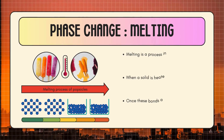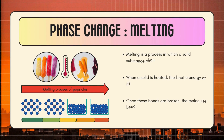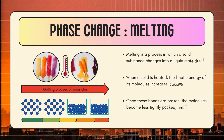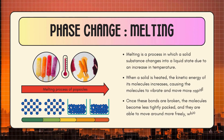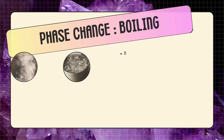Phase changes through heating — melting is a process in which a solid substance changes into a liquid state due to an increase in temperature. When a solid is heated, the kinetic energy of its molecules increases, causing the molecules to vibrate and move more rapidly. Once these bonds are broken, the molecules become less tightly packed and are able to move around more freely, which causes the solid to turn into a liquid.